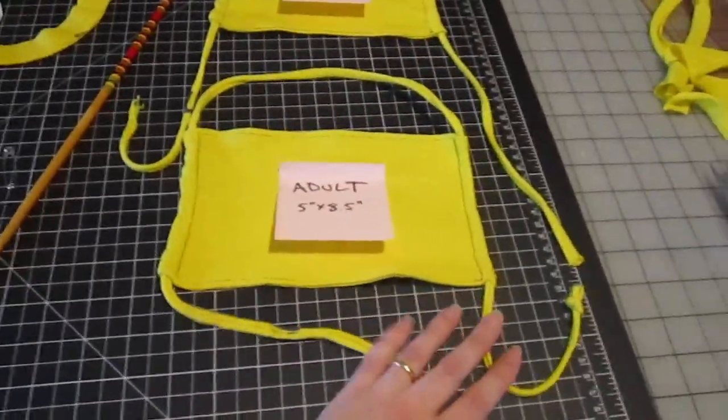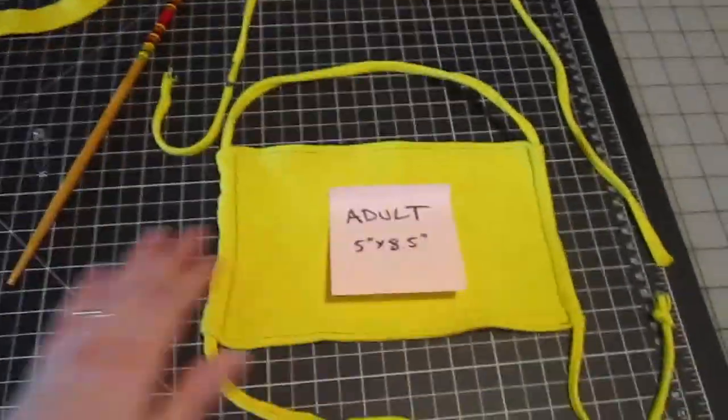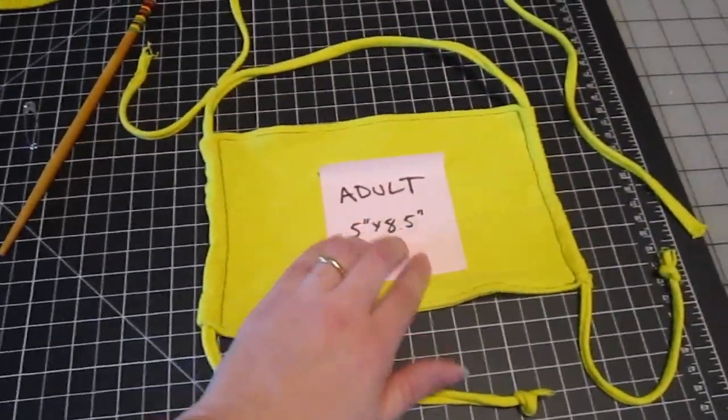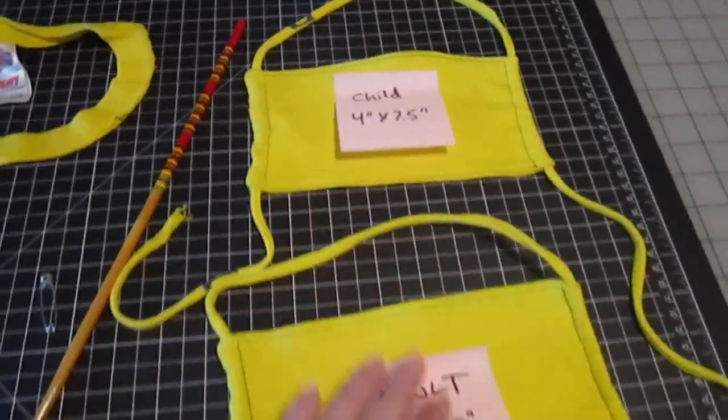I have two sizes. This is based on other guidance I found on other face masks, so the finish size of the adult is about five by eight and a half, child four by seven and a half.